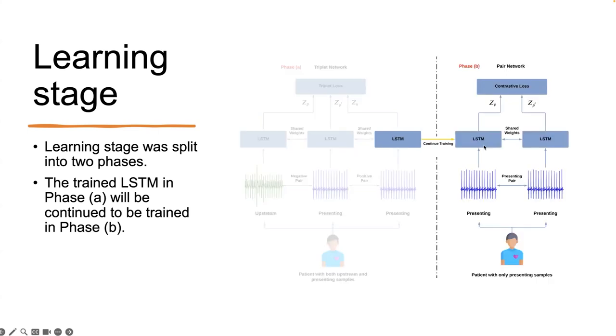We also have many patients with only presenting samples, which is very common in health studies. How do we process data from such patients? In our framework, we extract presenting pairs from patients with only presenting samples. We continue to refine the Siamese neural network from the first phase, which I refer to as the triplet network, to continue learning and refining the similarity from the presenting pairs. We use LSTM as the core structure of the Siamese neural network because LSTM can process sequences with different lengths.